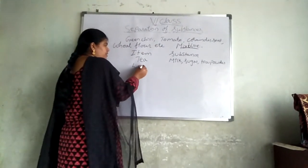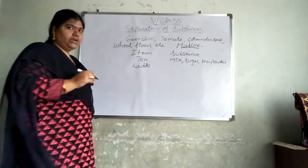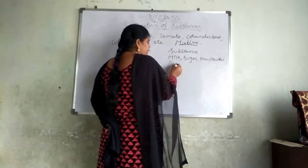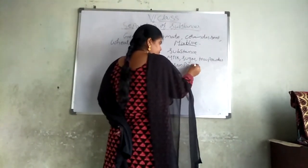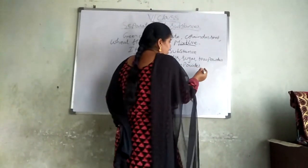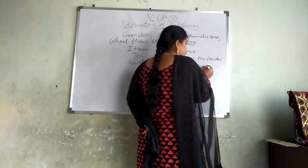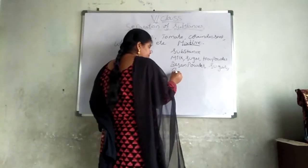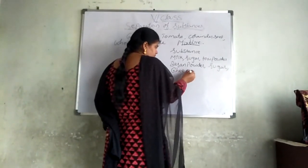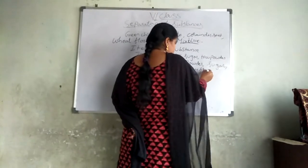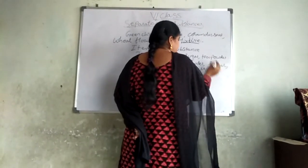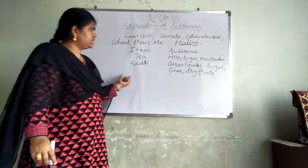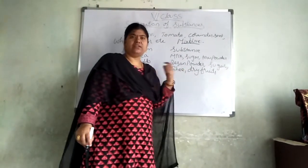Now I want to prepare a laddu. What are the things required? Besan powder, sugar, ghee, and dry fruits. These are the things needed to prepare a laddu.